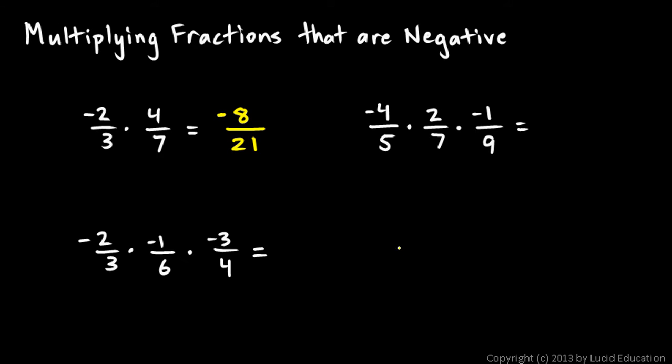Now, we could write that in different ways: you could write it with the negative sign out front, or on the numerator, or you could write it as 8 over negative 21. All of those expressions are mathematically equal to each other.